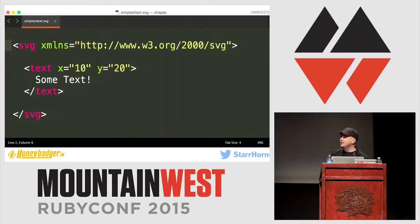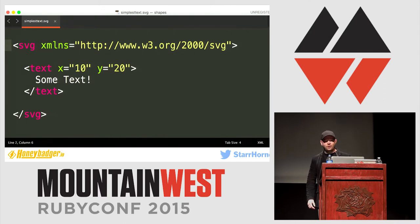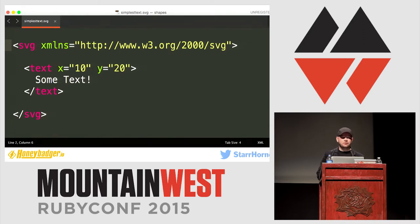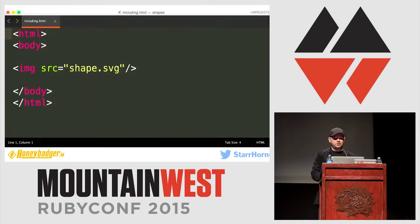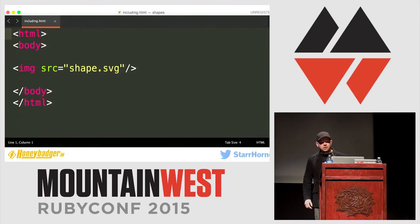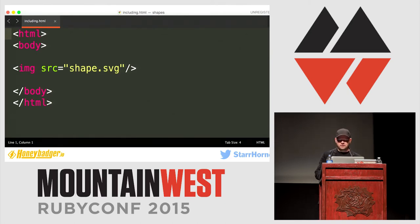SVG looks mostly like XML or HTML. You actually don't need a doctype or anything like that — this is valid. You can use it in your web apps or web pages a number of ways. The easiest is probably to just treat it like an image — you can use it in an IMG tag, or as a background image. The second way is to use the object tag, which gives you some nice fallback mechanism and allows you to do some JavaScript manipulation.